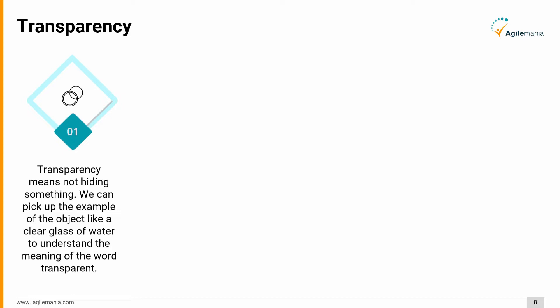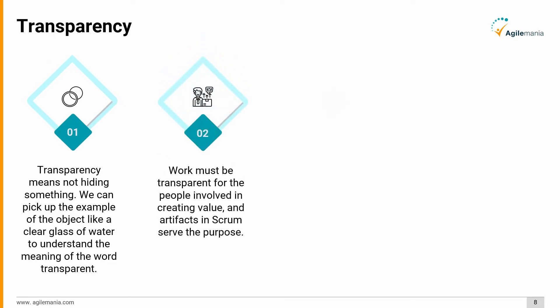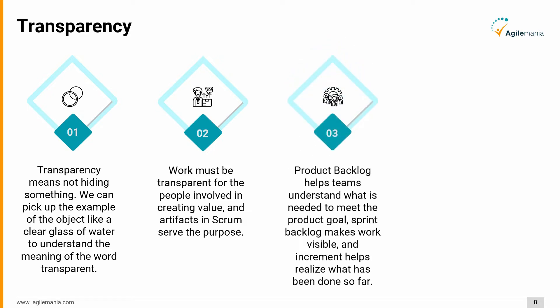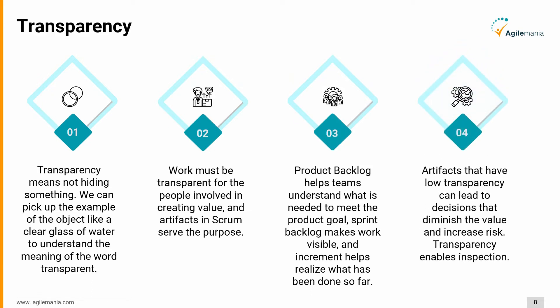Work must be transparent for the people involved in creating value, and artifacts in Scrum serve this purpose. The product backlog helps teams understand what is needed to meet the product goal. The sprint backlog makes work visible, and the increment helps realize what has been done so far. Artifacts with low transparency can lead to decisions that diminish value and increase risk. Transparency enables inspection.